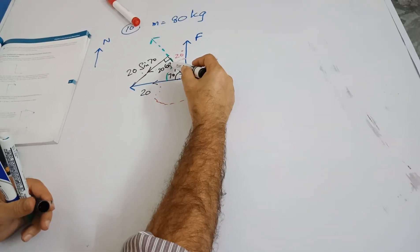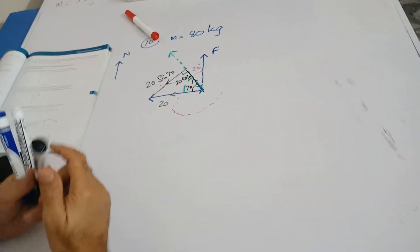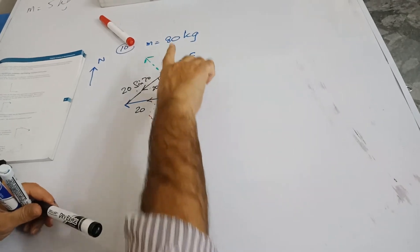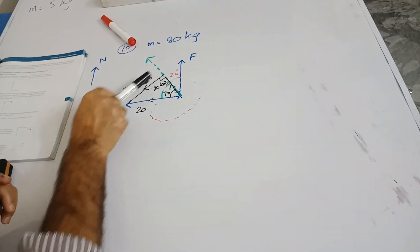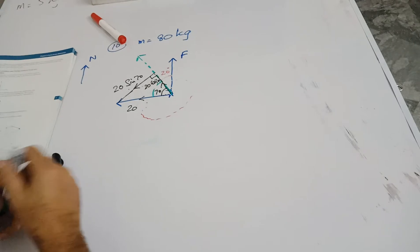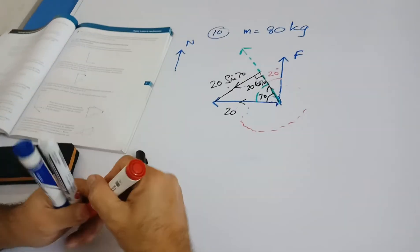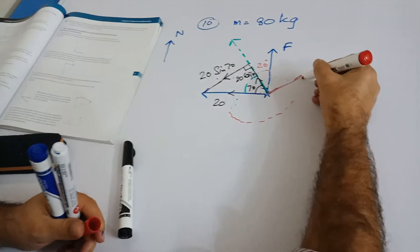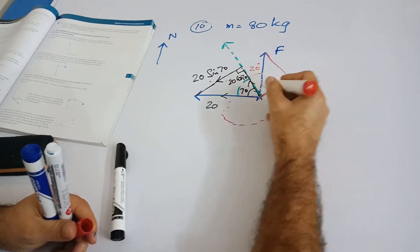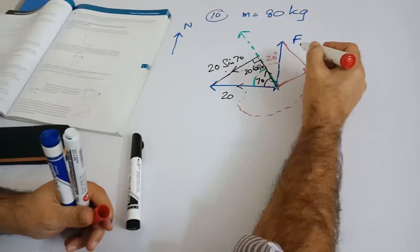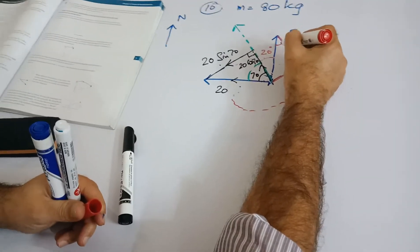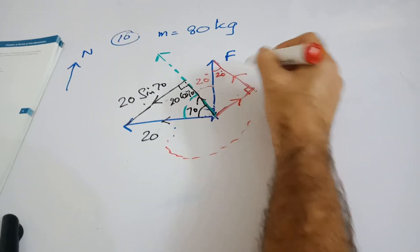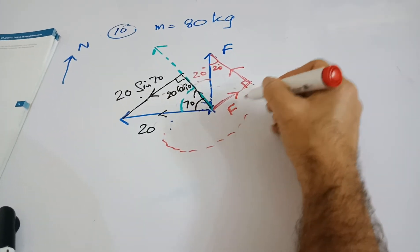Now sometimes to avoid overlapping, this F had to be resolved in this direction and then going to this direction. Instead of doing that, I'll be resolving it like this. This one is perpendicular to this direction and this one is parallel to this direction. If this is 20 degrees over here, I can mark 20 degrees over here.